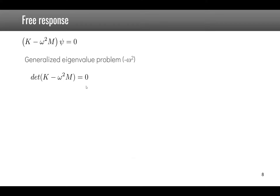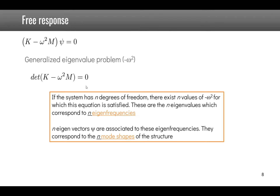This is called a generalized eigenvalue problem where the eigenvalue is omega-squared. The determinant of K minus omega-squared M equals zero. If the system has n degrees of freedom, there exist n values of omega-squared for which this equation is satisfied — these are the n eigenvalues, called eigenfrequencies in dynamics. To these eigenfrequencies are associated eigenvectors psi, called mode shapes.